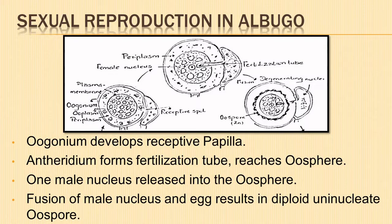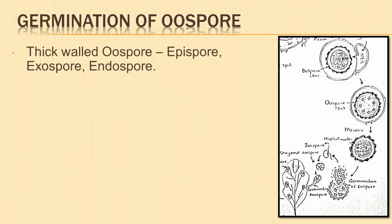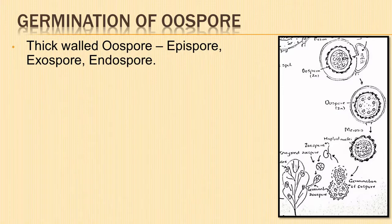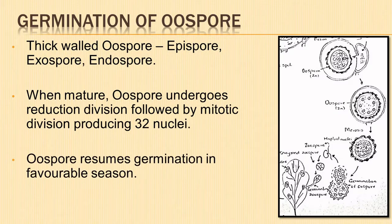A diploid uninucleate oospore is formed by the fusion of the male nucleus with the egg. The oospore has a thick wall, a tuberculate epispore, an exospore, and an endospore. When mature, the oospore of Albugo candida first undergoes meiotic division followed by a number of mitotic divisions to produce 32 nuclei.